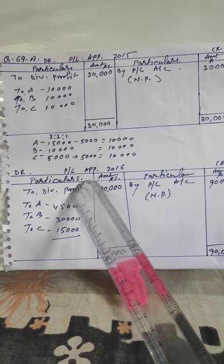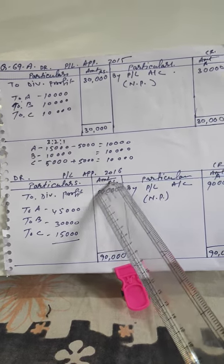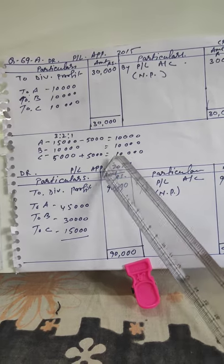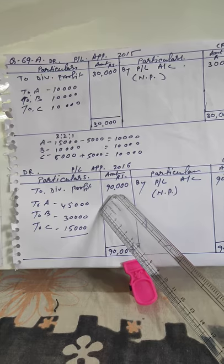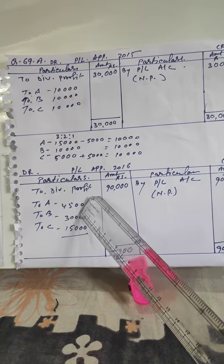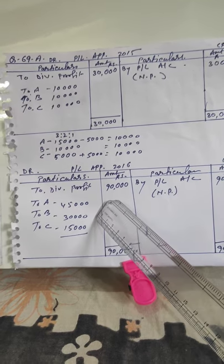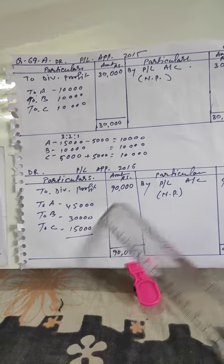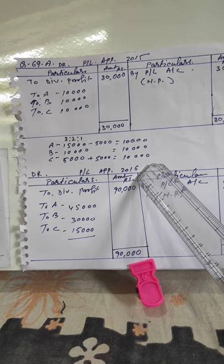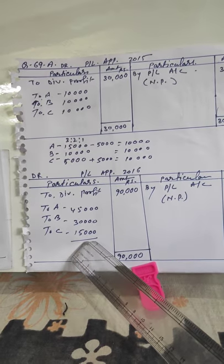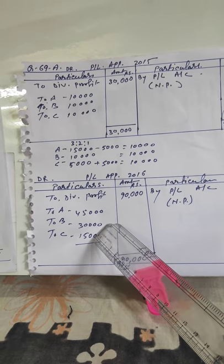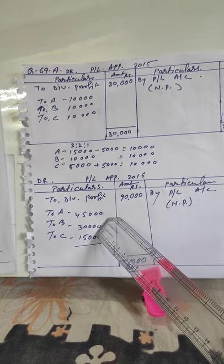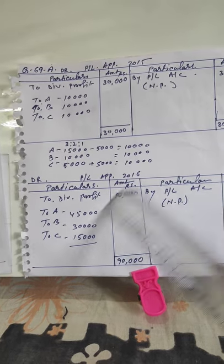Now the second situation: the P&L Appropriation Account for 2016, where net profit is Rs. 90,000. Distributing in the ratio 3:2:1: A gets Rs. 45,000, B gets Rs. 30,000, C gets Rs. 15,000. Here no adjustment is required, because C is already getting Rs. 15,000, which is more than the guaranteed minimum of Rs. 10,000. So no one has to give anything. Final distribution: A gets Rs. 45,000, B gets Rs. 30,000, and C gets Rs. 15,000. Total Rs. 90,000 profit is distributed in this way. Thank you.